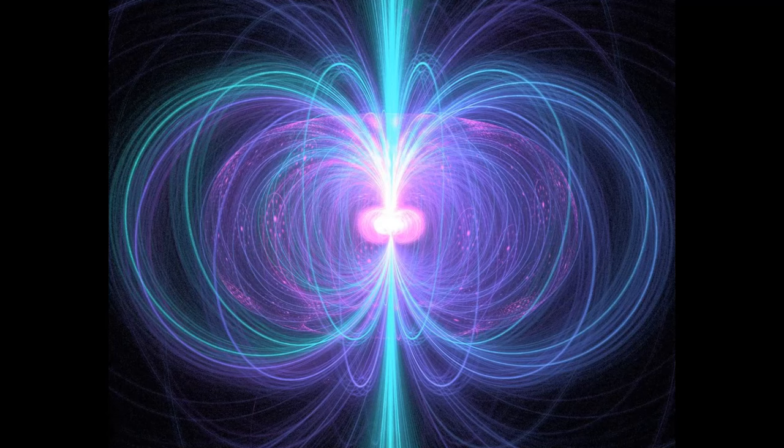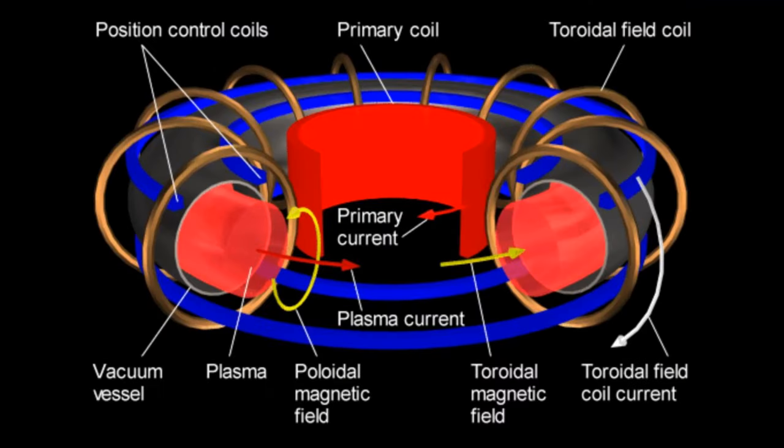One of the most common misconceptions is when you're talking about compression in the center, people go back to this picture right here. They continuously think that we're building a toroid with the magnetic fields only in compression. However, the actual answer is much different than that.